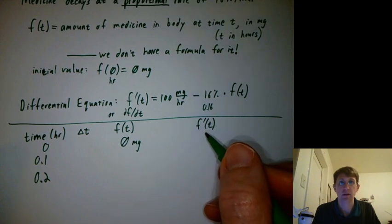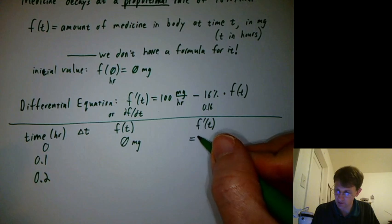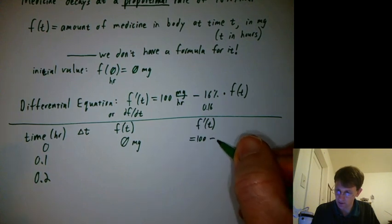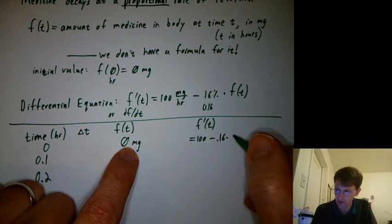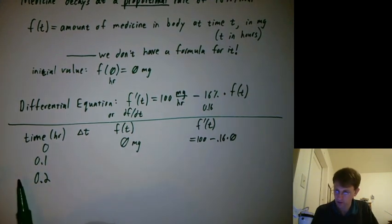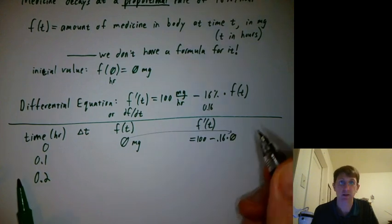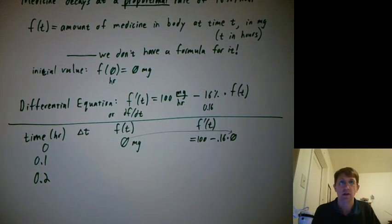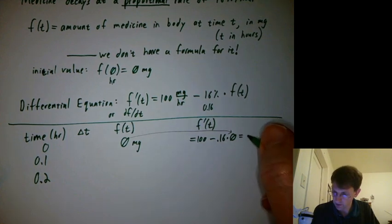What is f prime then? I have to use the information I have. So I'd say it's 100 minus 0.16 times the current f(t), which is 0. So we'll draw an arrow to trace where stuff is going. And what is 100 minus 0.16 times 0? It is 100.